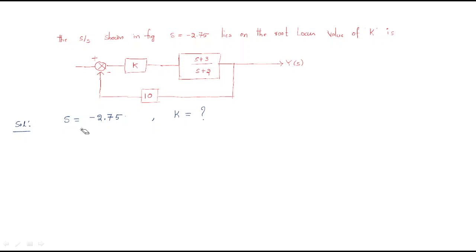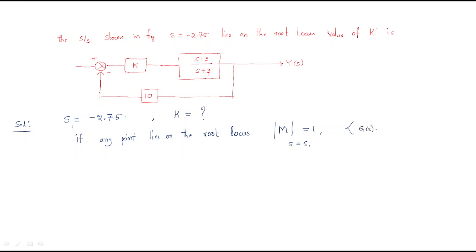If any point s lies on the root locus, it should follow two conditions. First, the magnitude condition: at s equal to s1, the magnitude of G(s)H(s) must equal 1. Second, the phase condition: the phase at s equal to s1 should be plus or minus 180 degrees.